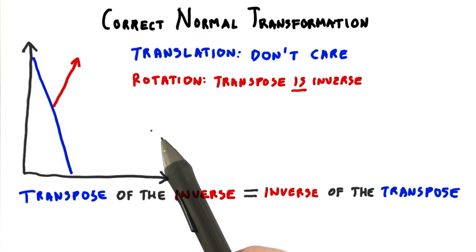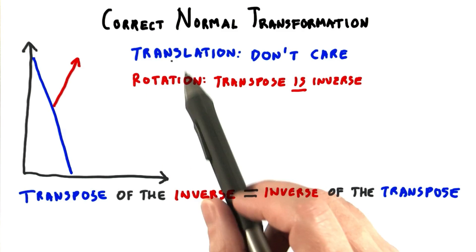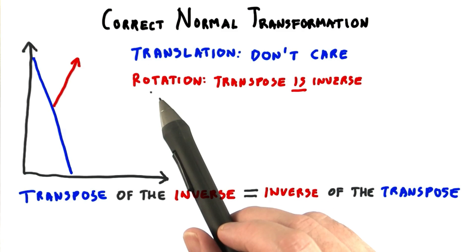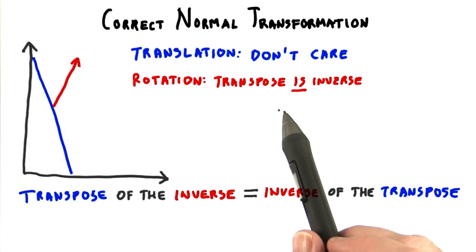This means that for a matrix made up of any series of translations and rotations, you can use this same matrix to transform points and normals. This is because the transpose is the inverse, as far as normals are concerned.